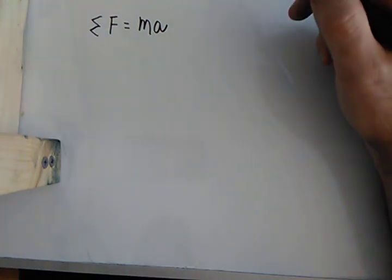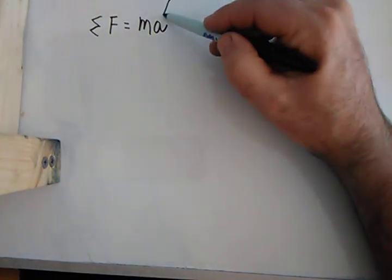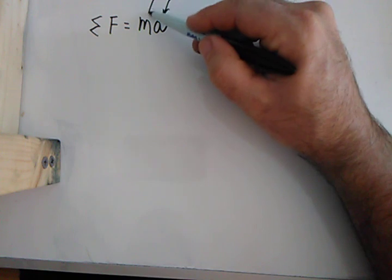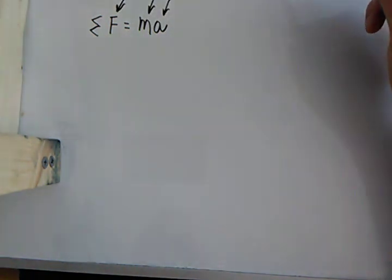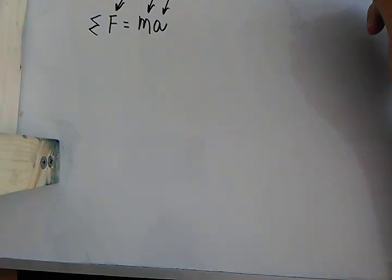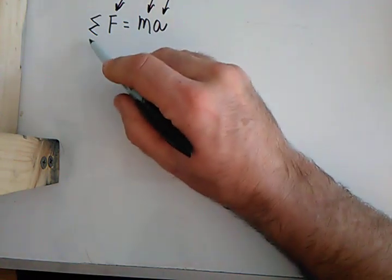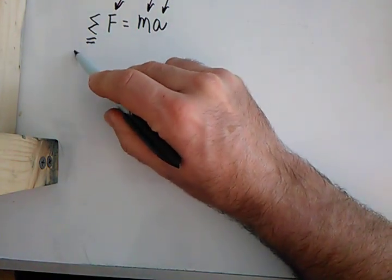So in the last problem set, you had to find acceleration, you had to find mass, and you might have had to find the net force. Now, one thing we didn't really talk too much about was this little term called net.